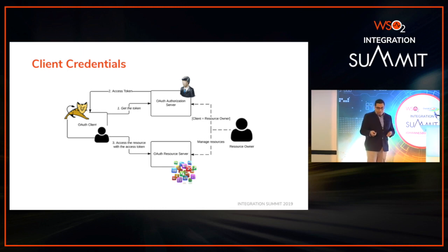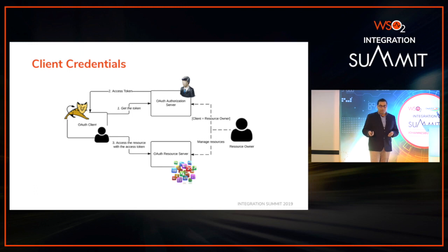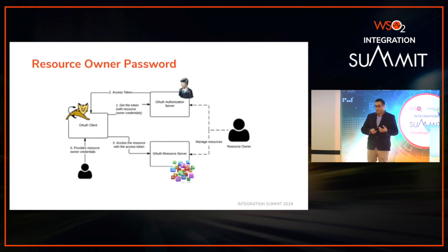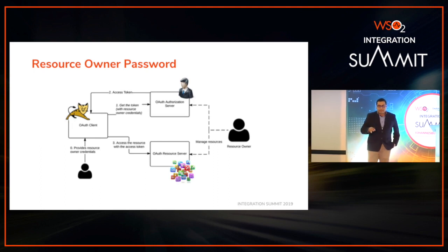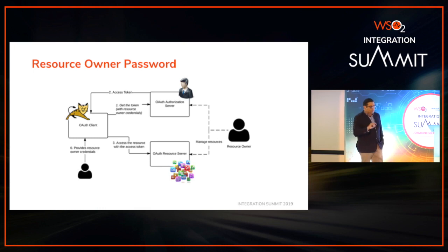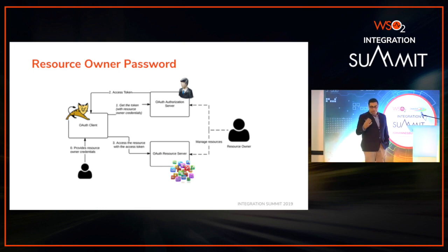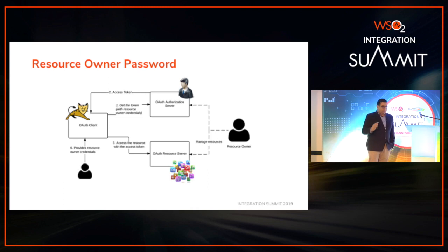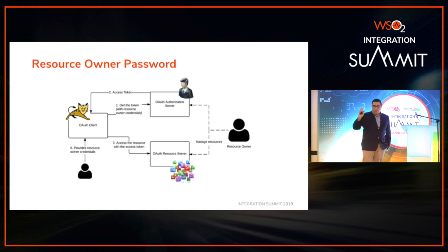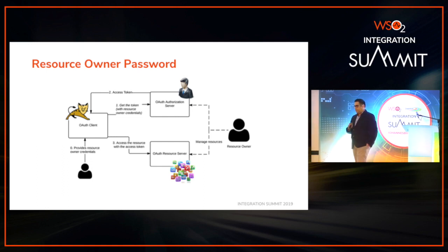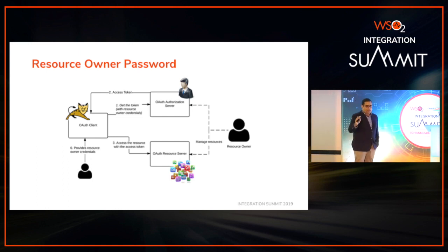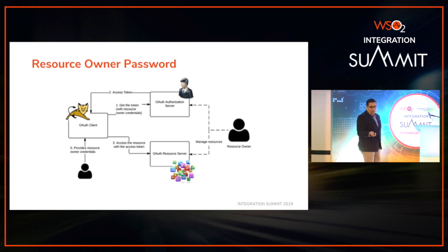The client credentials grant type is where the client and server are trusted parties with no user authentication — they only use client credentials because the assumption is that the resource owner is also the client. It's a basic exchange and not as safe as authorization code. In authorization code grant type you get a refresh token together with the access token. In implicit, you don't get a refresh token. In client credentials, you also don't get a refresh token. In the resource owner password grant type, the client obtains the resource owner's credentials directly without redirections, makes a single call with both credentials to the authorization server, gets an access token back, and you also get a refresh token.